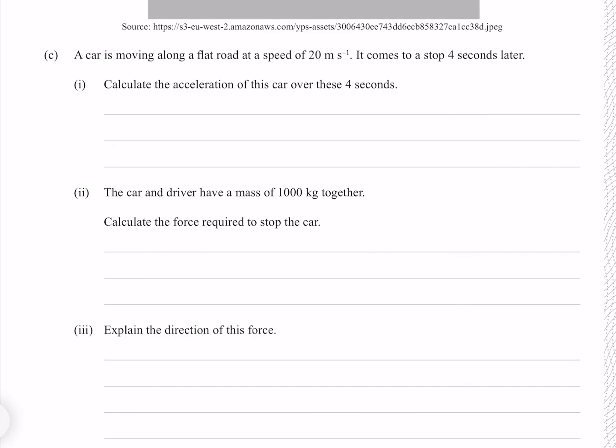A car is moving along a flat road with a speed of 20 meters per second. It comes to a stop 4 seconds later. Calculate the acceleration of this car over these 4 seconds. Acceleration is our change in velocity over our duration. Our change in velocity is 20 meters per second and our duration is 4, giving us 5 meters per second per second.